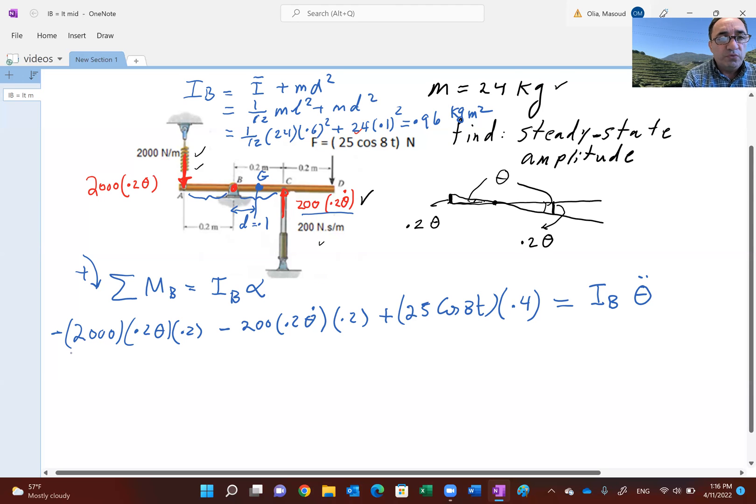If you clean up this equation, this should become negative 80 theta, and this becomes negative 8 theta dot. Then we have 10 cosine 8t, and we have 0.96 theta double dot.